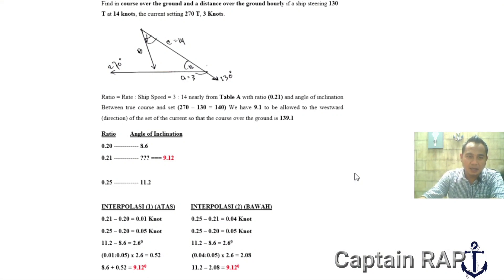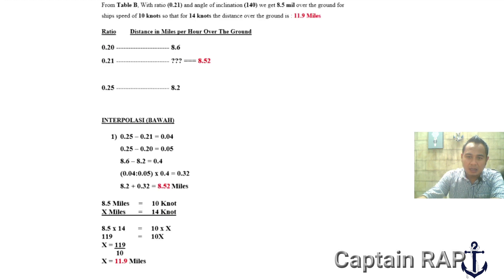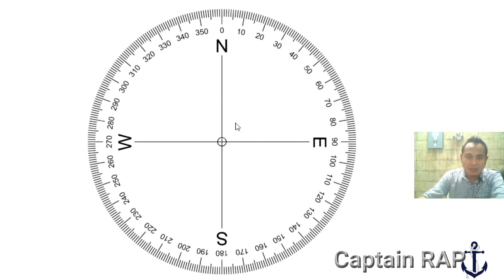Seperti di video sebelumnya, saya memberikan contoh soal. Find in course over the ground and distance over the ground hourly if a ship steering 130 at 14 knots, the current setting 270 3 knots. Jadi temukan course dan distance over the ground per jamnya jika kapal dikemudikan dengan haluan 130 derajat dengan kecepatan 14 knot, arus 270 derajat kecepatannya 3 knots. Ini gambarnya untuk menjabarkan soal ini. Jadi ini haluan yang dikemudikan kapal 130 derajat, kecepatannya 14 knot, kemudian mendapatkan arus ke arah 270 derajat dengan kecepatan 3 knots.